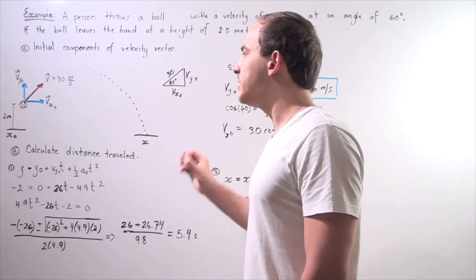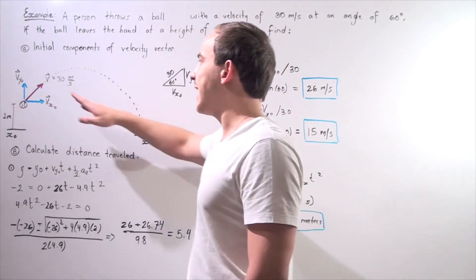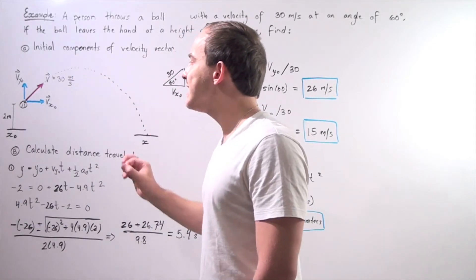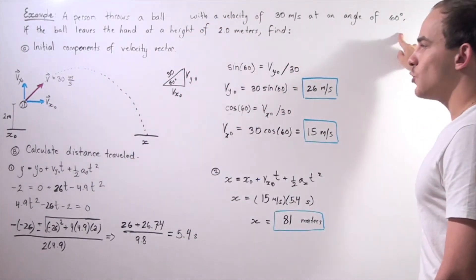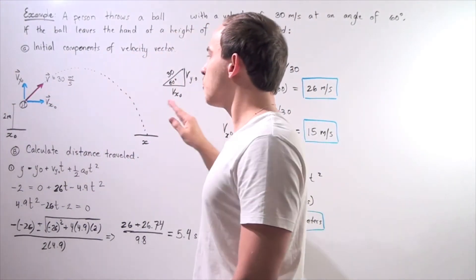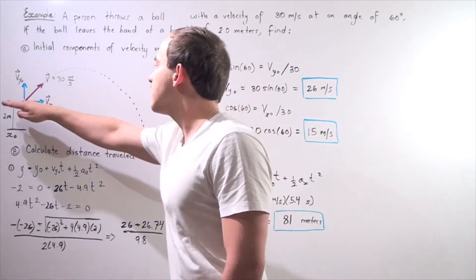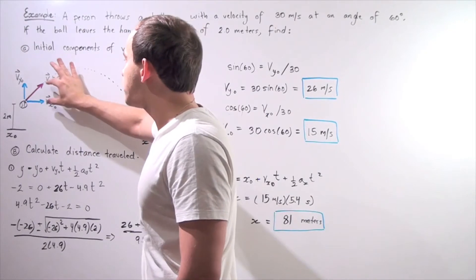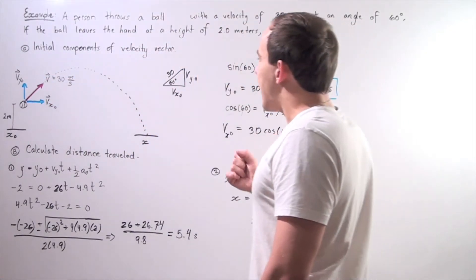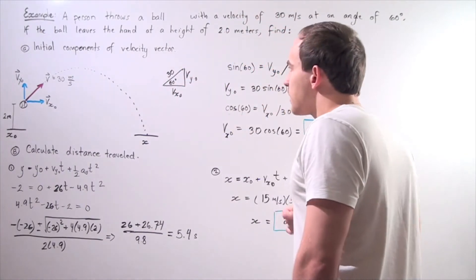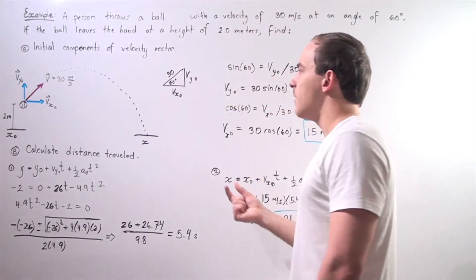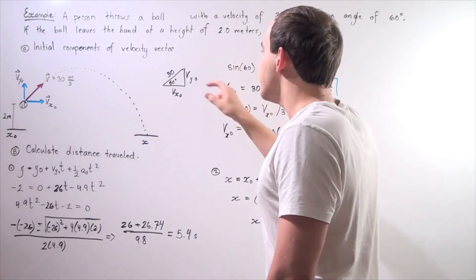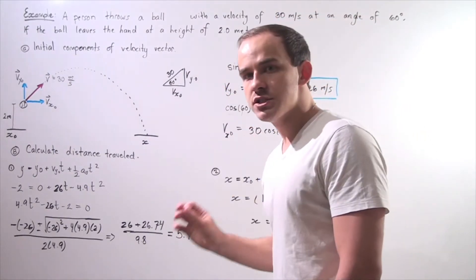In part A, we're simply looking for the x-component and y-component of our velocity vector that has a magnitude of 30 meters per second, and that makes an angle of 60 degrees with respect to our x-axis. Let's begin by taking our v-y-naught and shifting it over to this side to create the following triangle. Now we have a 60-30-90 triangle. Our hypotenuse is 30, and we want to find what our base is — our x-component — and what our height is — our y-component. We use our trigonometric functions, sine and cosine.